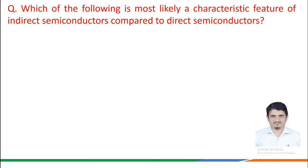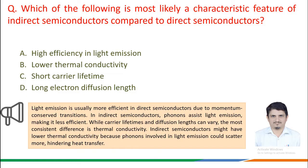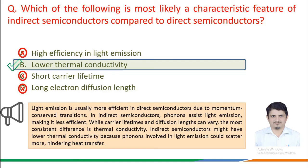Which of the following is most likely a characteristic feature of indirect semiconductors compared to direct semiconductors? Light emission is more efficient in direct semiconductors due to momentum-conserved transitions. In indirect semiconductors, phonons assist light emission making it less efficient. The most consistent difference is thermal conductivity — indirect semiconductors may have lower thermal conductivity because phonons involved in light emission scatter more, hindering heat transfer. The correct answer is Option B: lower thermal conductivity.